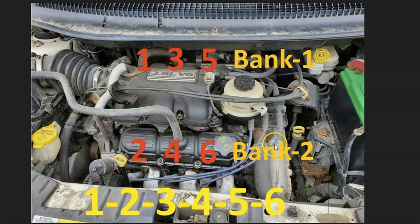If you ever need to know what side of the engine is bank one and bank two, just find the number one cylinder on that engine. That's the bank one side, and the opposite is bank two.